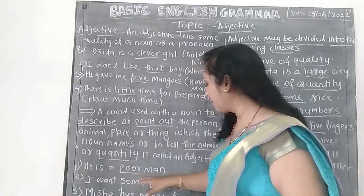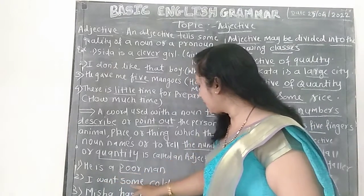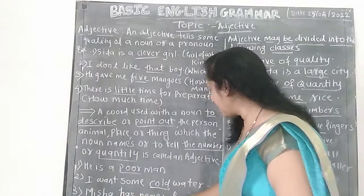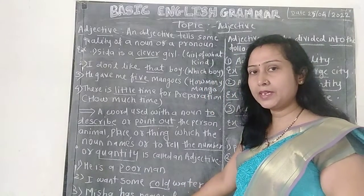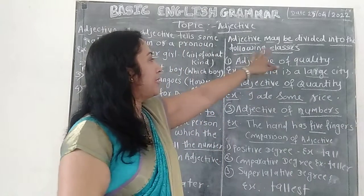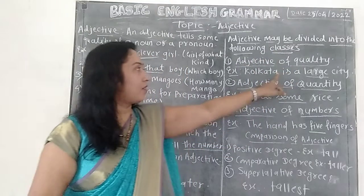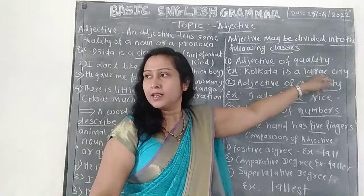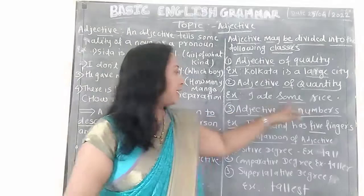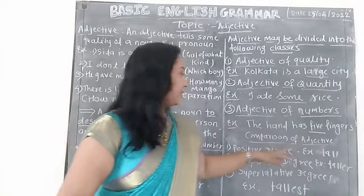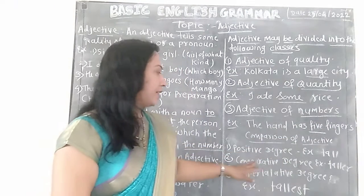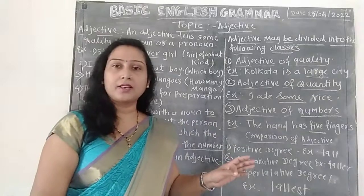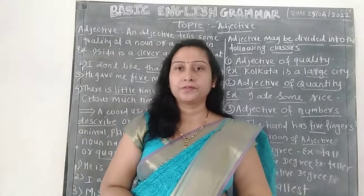Exact definition: a word used with a noun to describe or point out the person, animal, place, or things which the noun names, or to tell the number or quantity, is called an adjective. Examples: He is a poor man — poor is adjective. I want some cold water — cold is adjective. Misha has many friends — many is adjective. Classes: adjective of quality (Kolkata is a large city), adjective of quantity (I ate some rice), adjective of numbers (the hand has five fingers). Comparison: positive — tall, comparative — taller, superlative — tallest. Thank you.